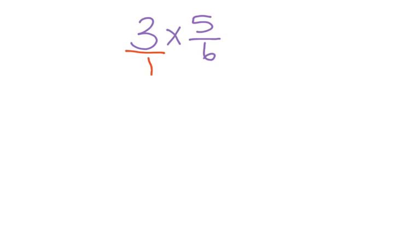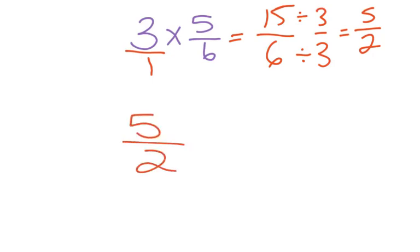When I multiply fractions, all I need to do is go straight across. 3 times 5 is 15. 1 times 6 is 6. Can I simplify? Yes, I can. There is a common factor of 3 in both of these. So 15 divided by 3 is 5. 6 divided by 3 is 2. That is the simplest improper fraction I have. So I can choose to leave my number as 5 halves.